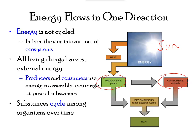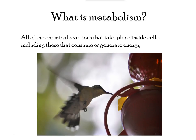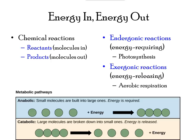All reactions either break down large molecules to release energy, or take small molecules and store energy in large macromolecules. Chemical reactions can be used to make large molecules from small ones, or large molecules can be broken into smaller molecules. Anabolic pathways require energy to organize small molecules into larger ones, while catabolic reactions break larger molecules and release stored energy that can be used in other reactions.